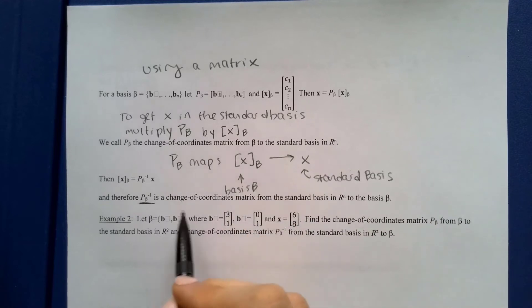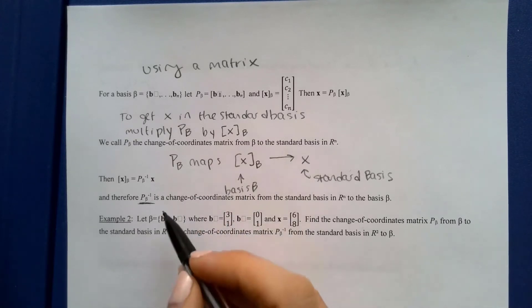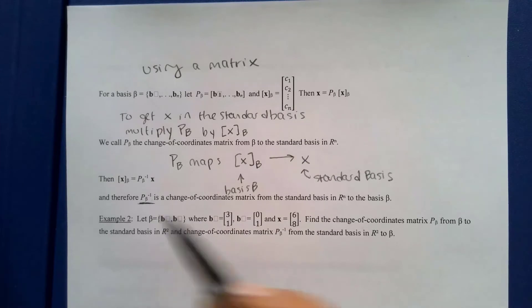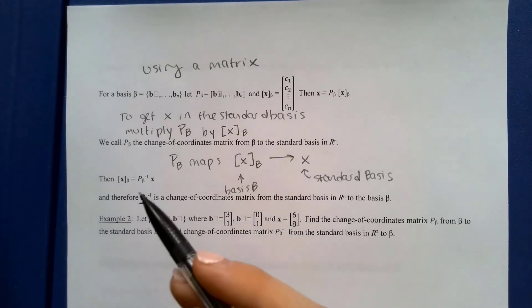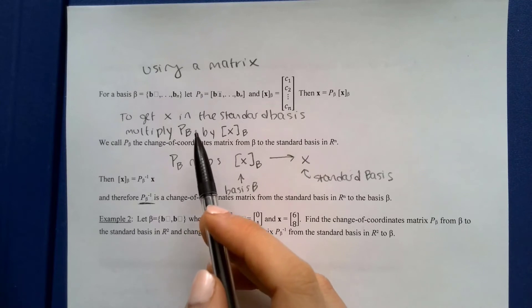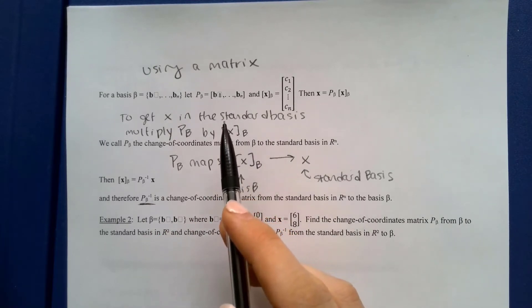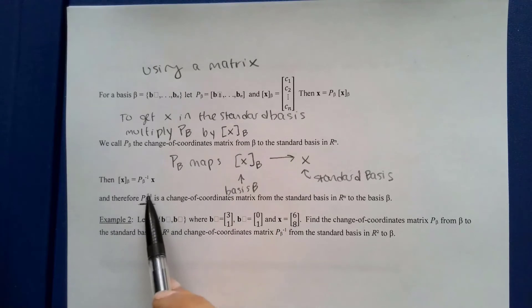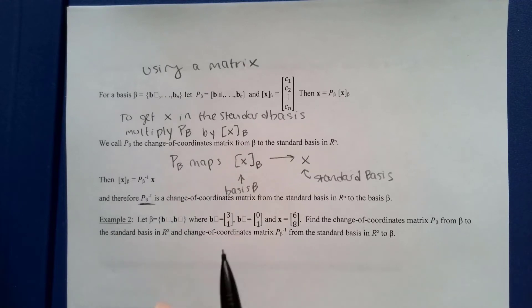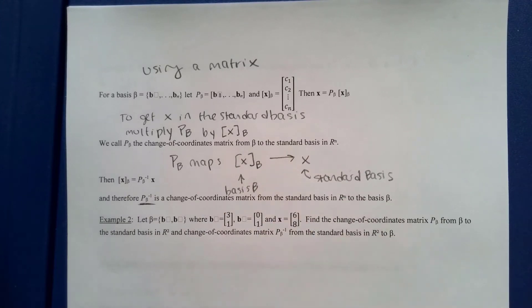If we want to go the other direction — from the standard basis to basis B — we find the inverse of P_B. That should be relatively easy since we're used to finding inverses. However, a basis for a subspace doesn't have to span all of Rm, so if we have a basis for a subspace it may not be as easy to find the inverse. We can always think about it as a system of equations instead.